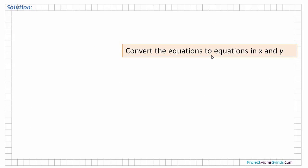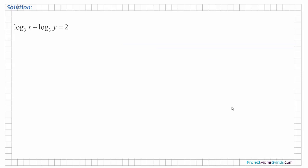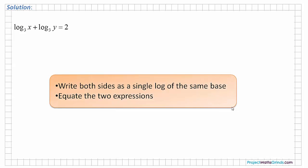To do these type of questions we first need to convert both equations to equations in x and y only — in other words we need to get rid of the log terms. So let's consider the first equation. As before, we need to write both sides as a single log of the same base and then we can equate the two expressions.